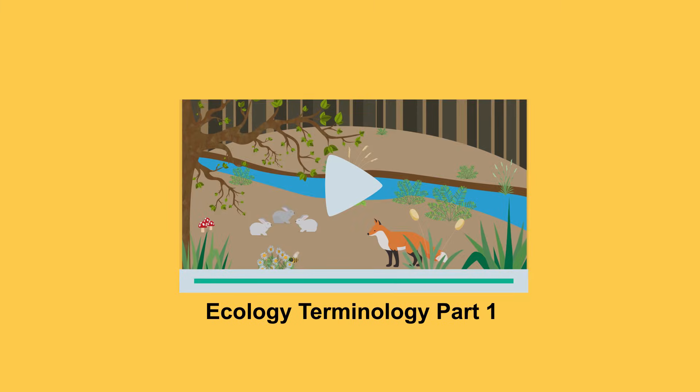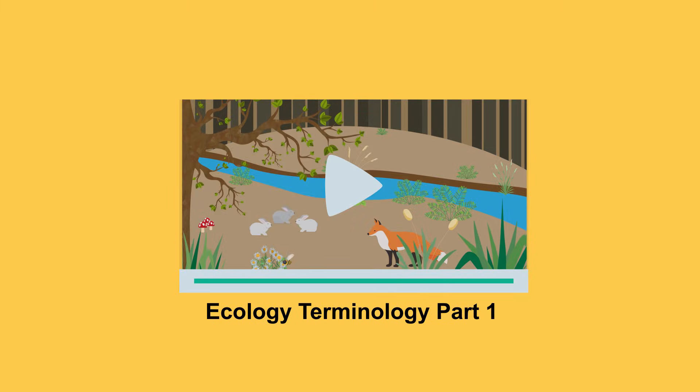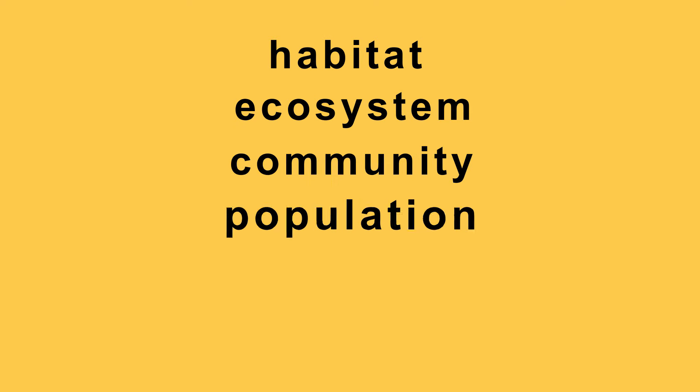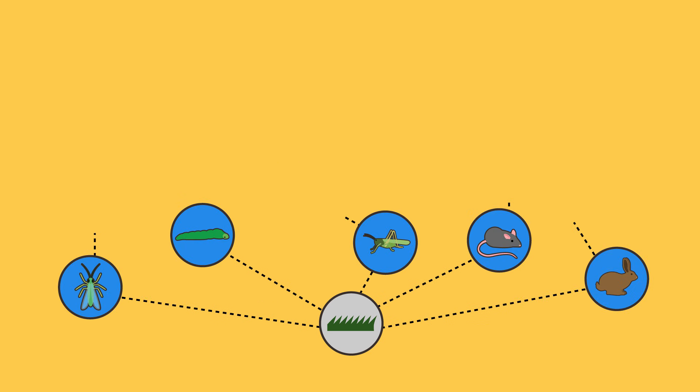In the first video on ecology terminology we looked at the following terms. In this video we are going to look at a food chain and the different roles within it. A food chain shows the sequence of organisms in a habitat that are dependent on the one before as a source of food.